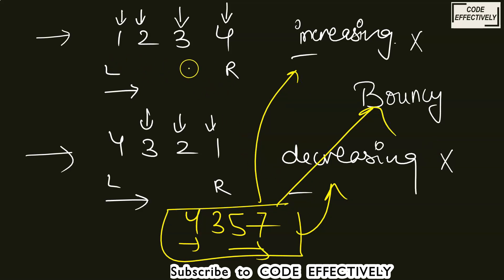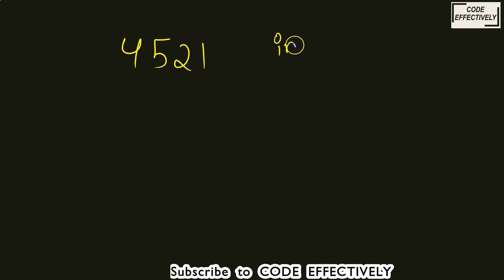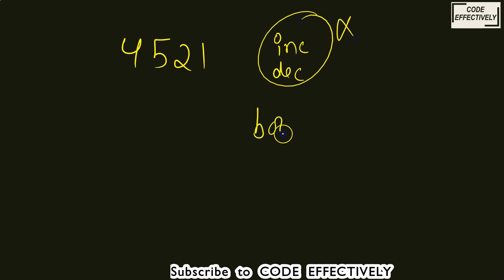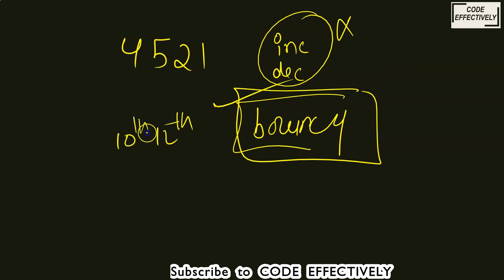For another example, a bouncy number could be 4, 5, then a sudden decrease. A number that does not follow a specific pattern — neither increasing nor decreasing — is known as a bouncy number. This question could be asked in your interviews or in your 12th or ICSE/10th board exams.